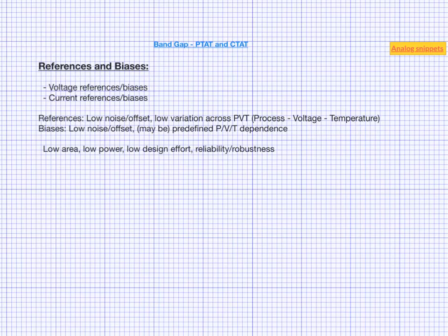Before jumping into band gap reference generators, let us consider some very simple schemes to generate voltage references and current biases. The simplest voltage reference probably could be the supply itself, or maybe a divided down version of that supply. Let us consider its PVT variations.